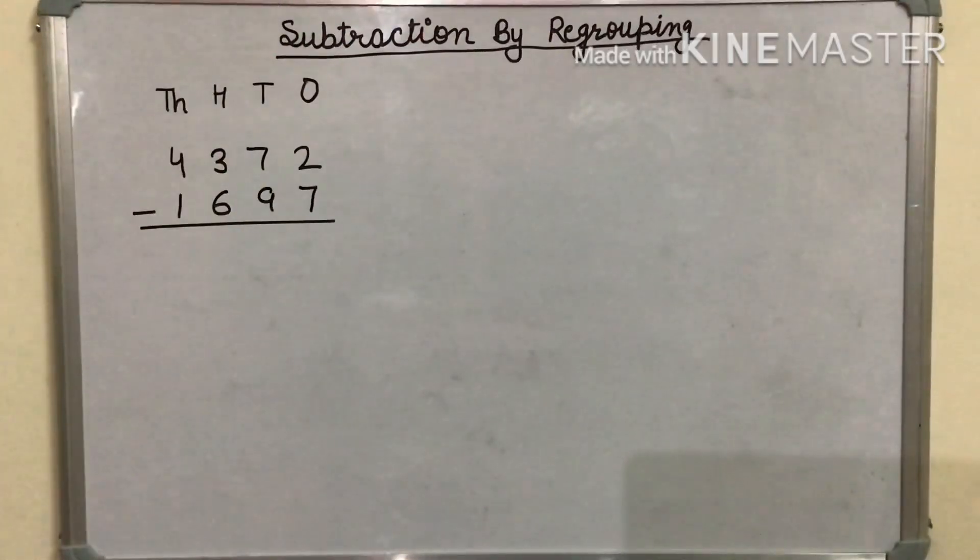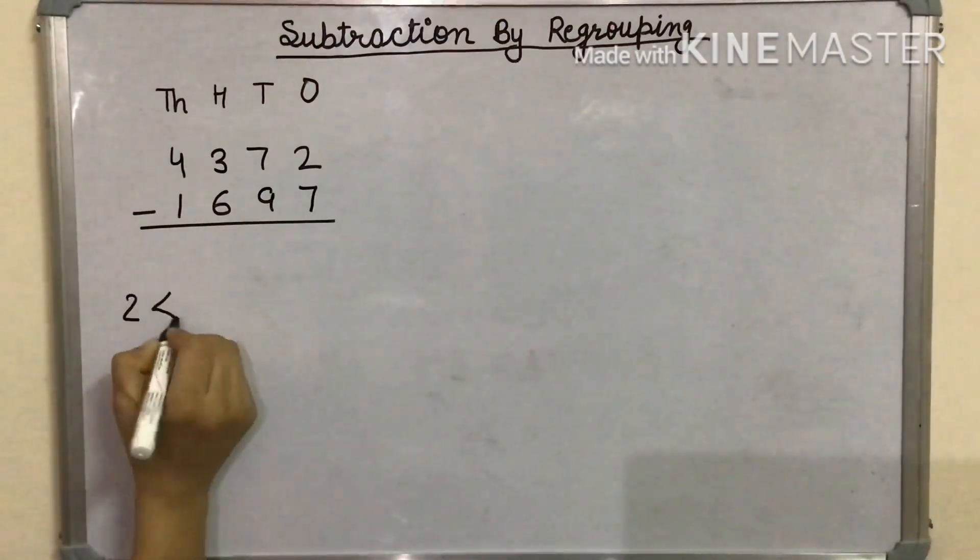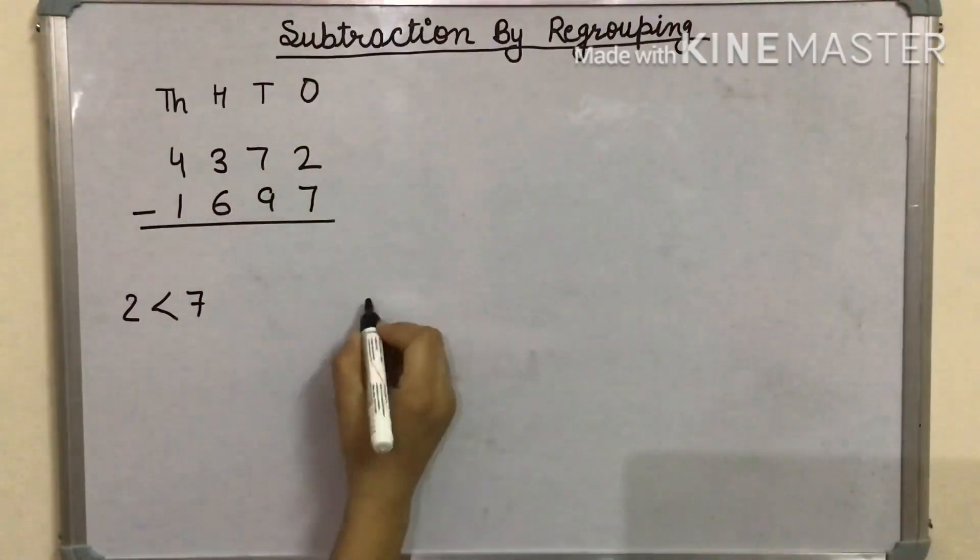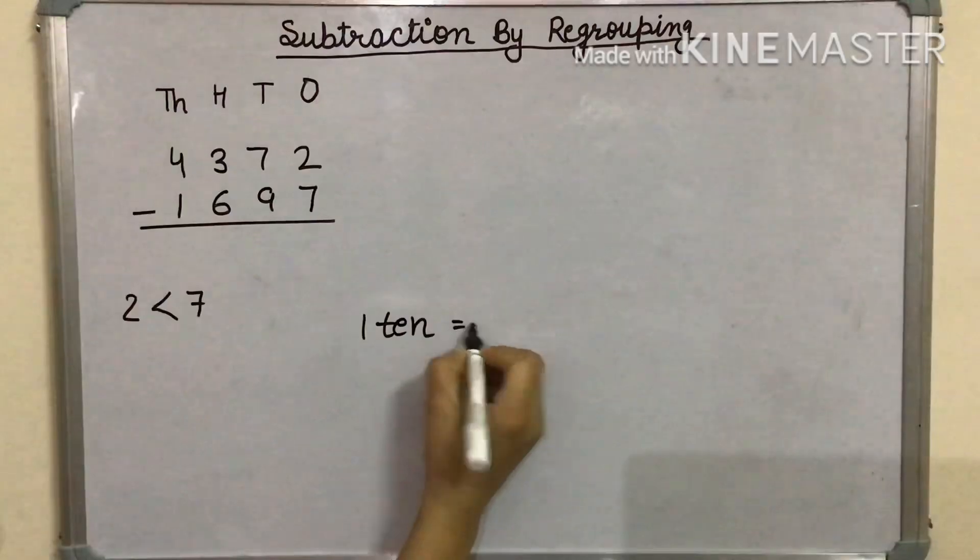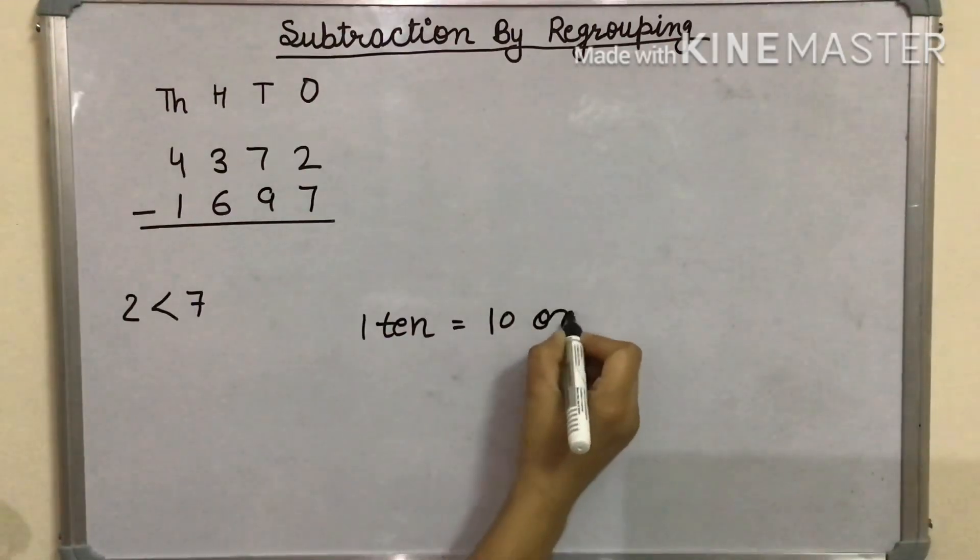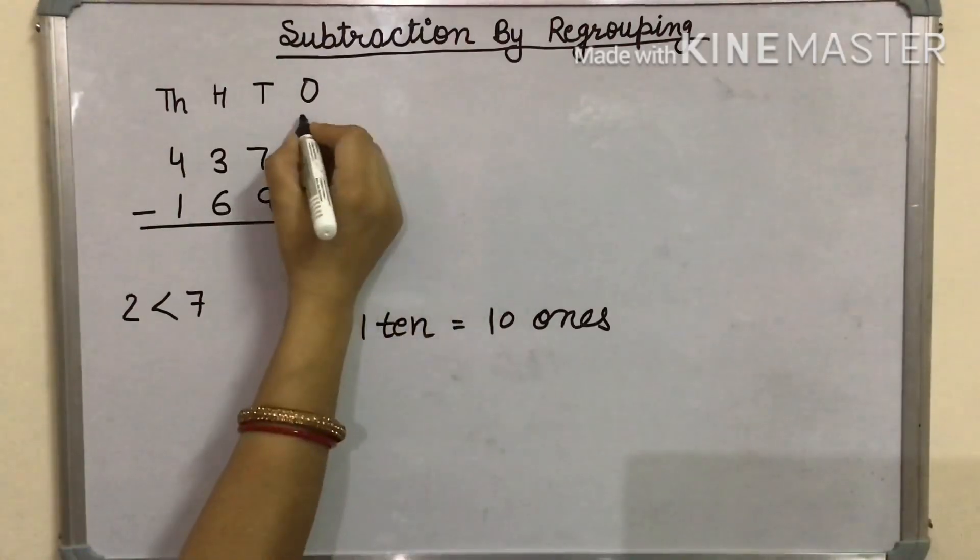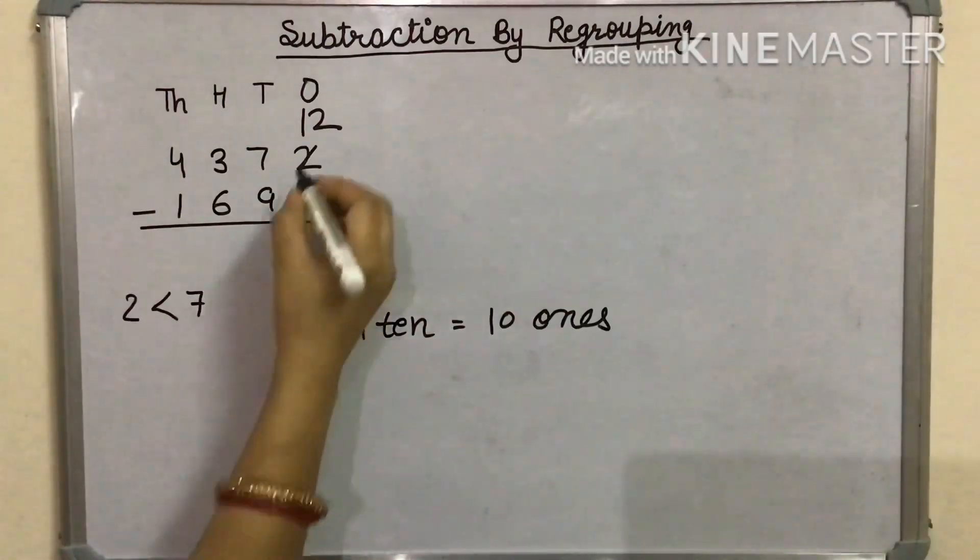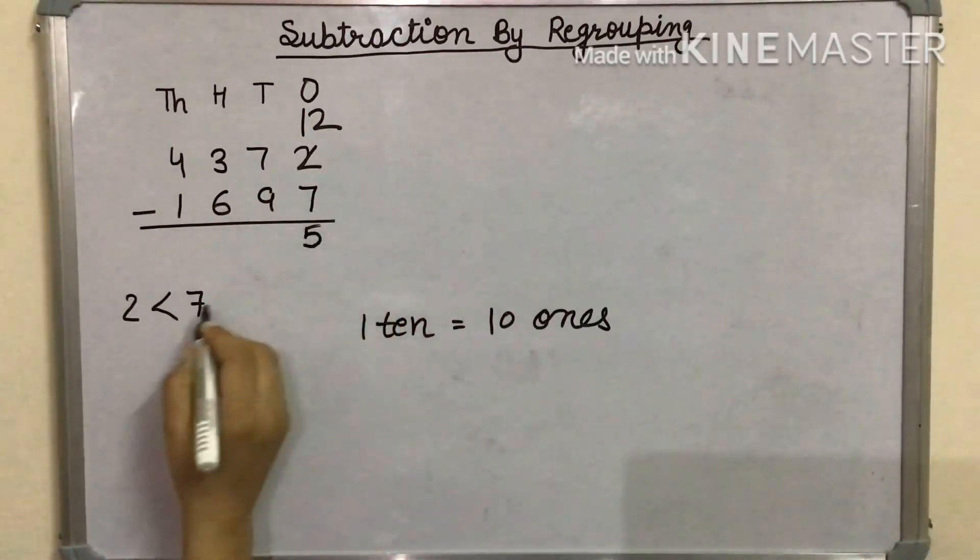Now, we have to subtract the 1s digit. Here, 2 is less than 7, so we will borrow 1 ten. 1 ten is equal to 10 ones. So, the 1s digit will be 12. We will subtract 7 from 12 and the answer will be 5.